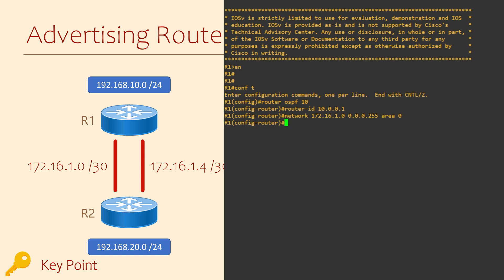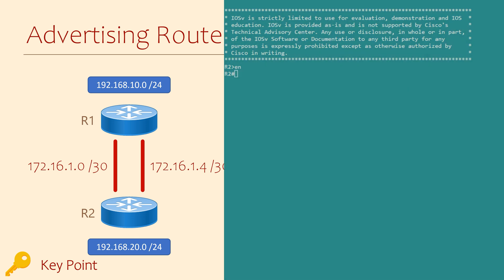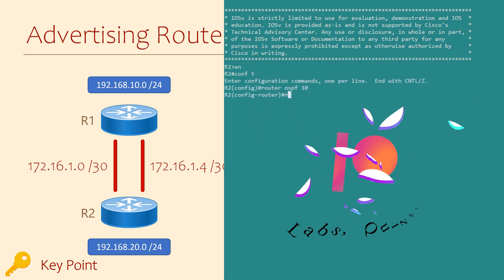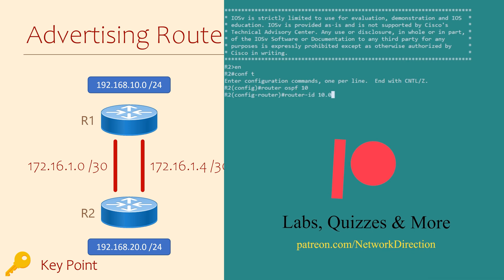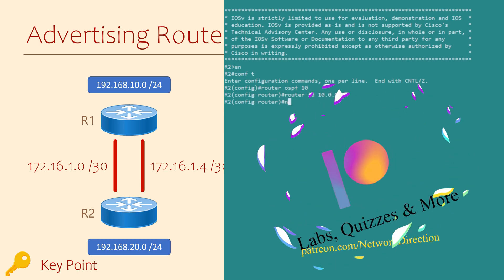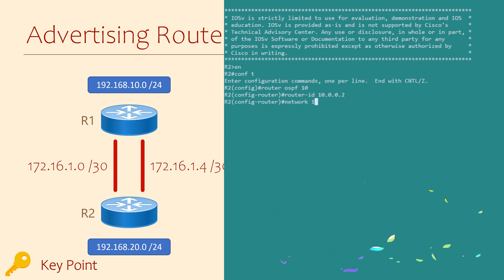While we're here, let's add our other network 192.168.10.0/24 into OSPF. We'll move over to R2 and repeat the process there — that's starting OSPF, setting a router ID, and adding networks.